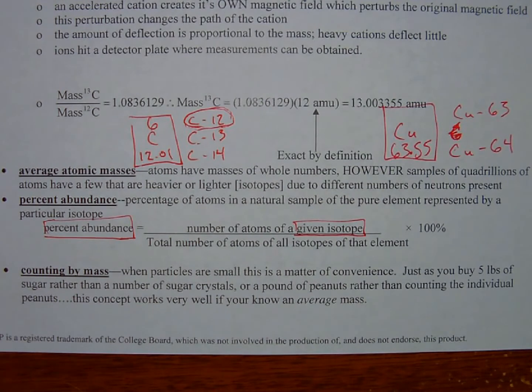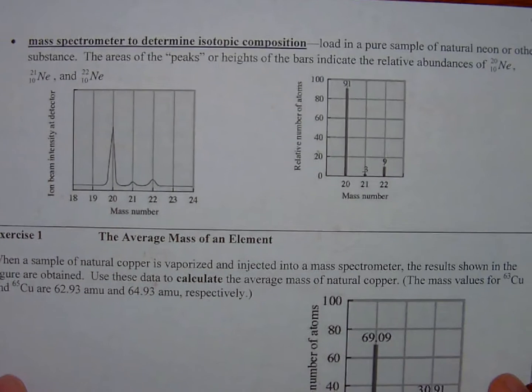you have a very good idea of how many peanuts you're going to get if you buy one pound of peanuts. If you know the average mass of a sugar crystal, you'll know roughly about how many sugar crystals you're getting when you buy five pounds of sugar.